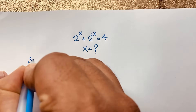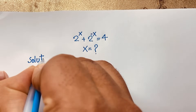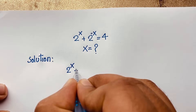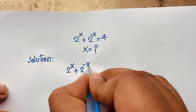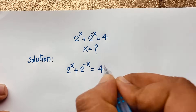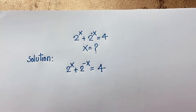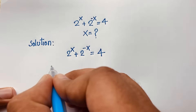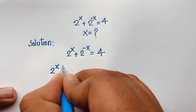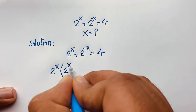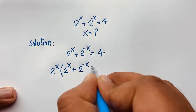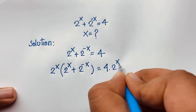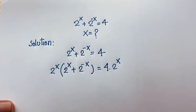So, solution. Our question is 2 to the power x plus 2 to the power negative x is equal to 4. Now, at this moment, I multiply both sides by 2 to the power x. So I can see that it will be 2 to the power x times 2 to the power x plus 2 to the power negative x, is equal to 4 times 2 to the power x.